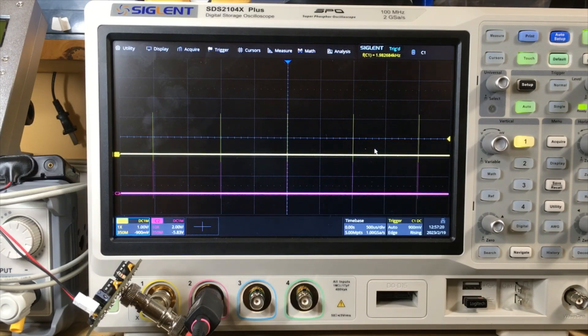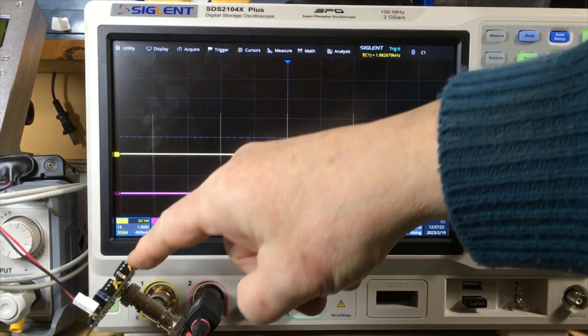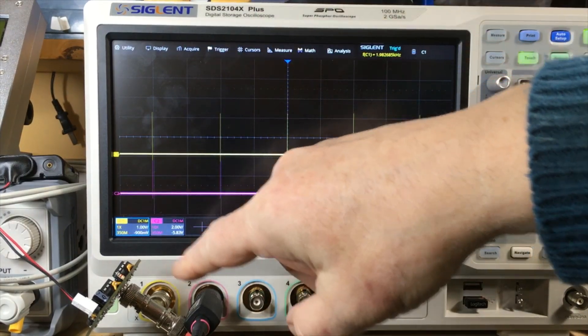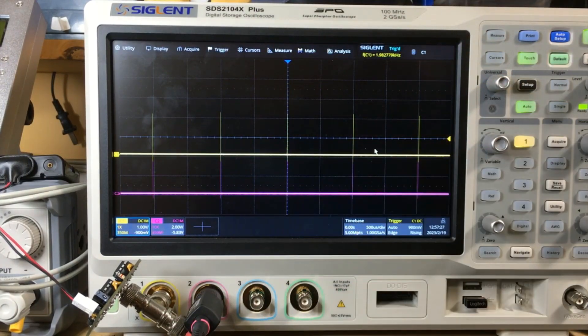Here we have a signal I'm producing with a pulse generator. The pulse generator is going into a T on channel one and then down through a few meters of cable. You can see the pot of cable down here.